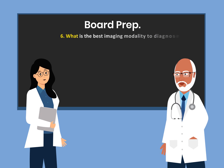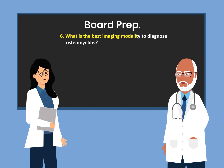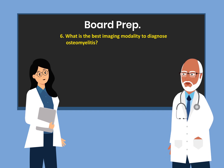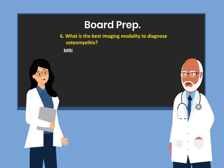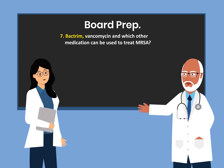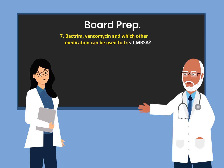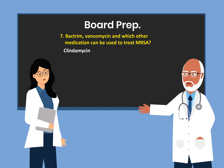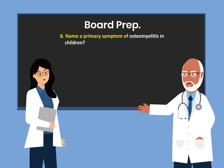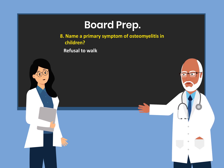What is the best imaging modality to diagnose osteomyelitis? MRI. Bactrim, vancomycin, and which other medication can be used to treat MRSA? Clindamycin. Name a primary symptom of osteomyelitis in children. Refusal to walk.